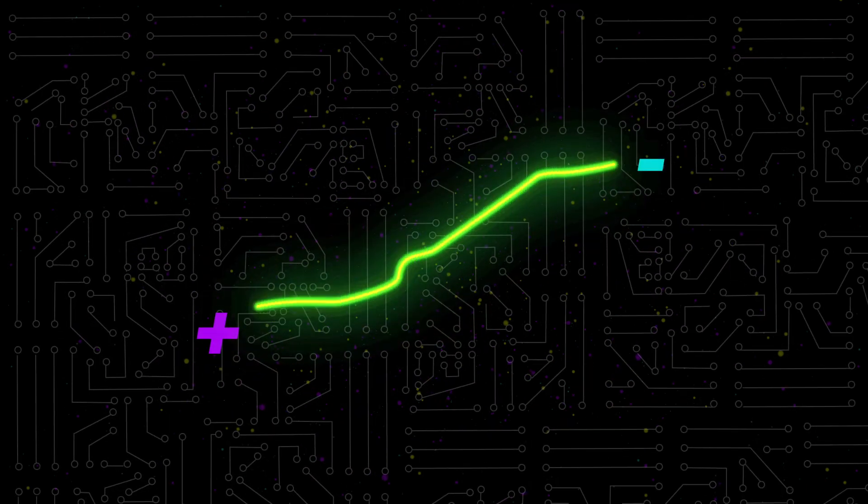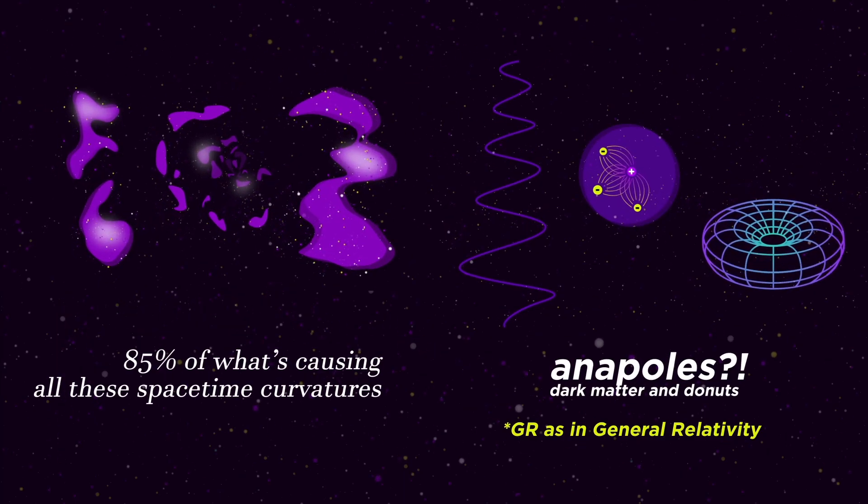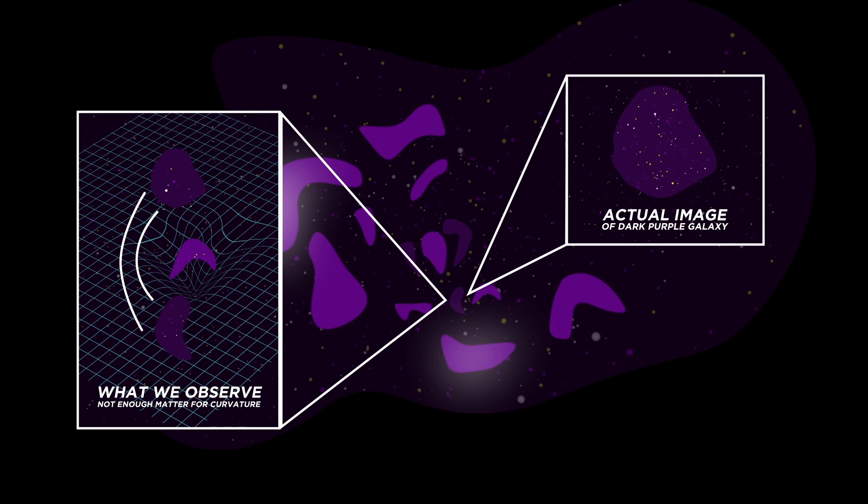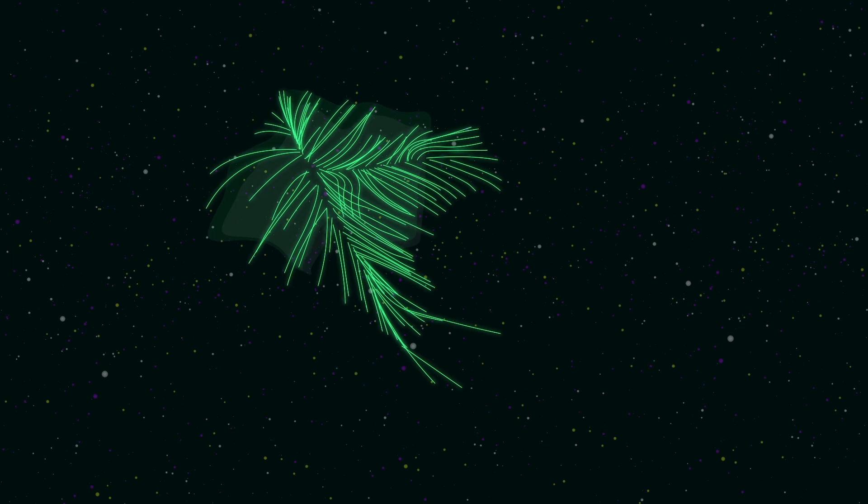Years ago, the electron was just another weird particle we didn't understand. But now its ability to move around is the reason you're watching this video. Imagine what we could do with dark matter. A super exciting possibility is a 100% efficient source of energy. Watch this next video and you'll see why. Once again, thanks for watching, I'll see you next time.